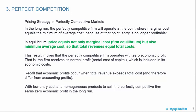In the long run, the perfectly competitive firm will operate at the point where marginal cost equals the minimum of average cost, because at that point entry is no longer profitable. So in equilibrium, price equals not only the marginal cost at the firm equilibrium, but also the minimum average cost, so that total revenues equal total costs.